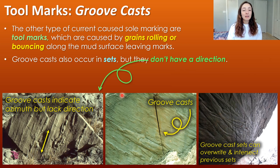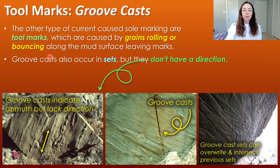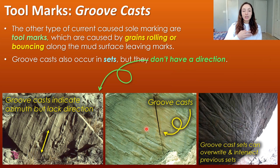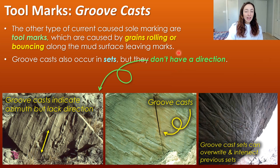The other type of current-caused sole marking is tool marks. Tool marks are caused by grains rolling or bouncing along the mud surface, leaving marks behind. The major type of tool mark is groove casts. Like flute casts, groove casts occur in sets and are preserved as sole markings on the bottom of sand beds that overlaid the muddy substrate that the grains had imprinted.